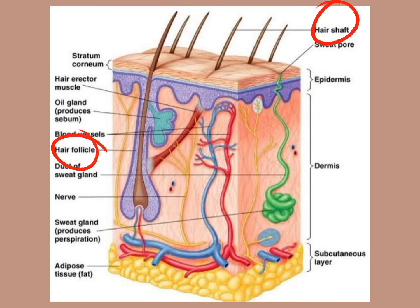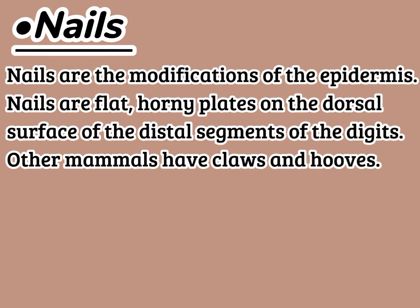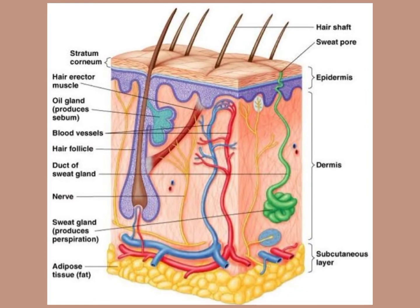This is the hair shaft present at the outside of the skin and the hair follicle inside the skin. Nails are modifications of the epidermis — flat, horny plates on the dorsal surface of the distal segments of the digits. Other mammals have claws and hooves.